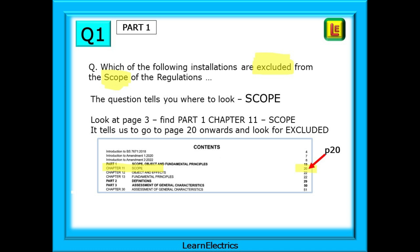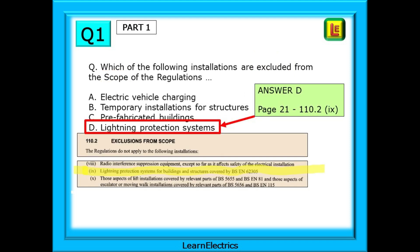Then we can look for the next keyword excluded and here we have on page 21 exclusions from the scope regulation 110.2. Looking down this list we find our answer. Lightning protection systems are excluded from the scope. Answer D.